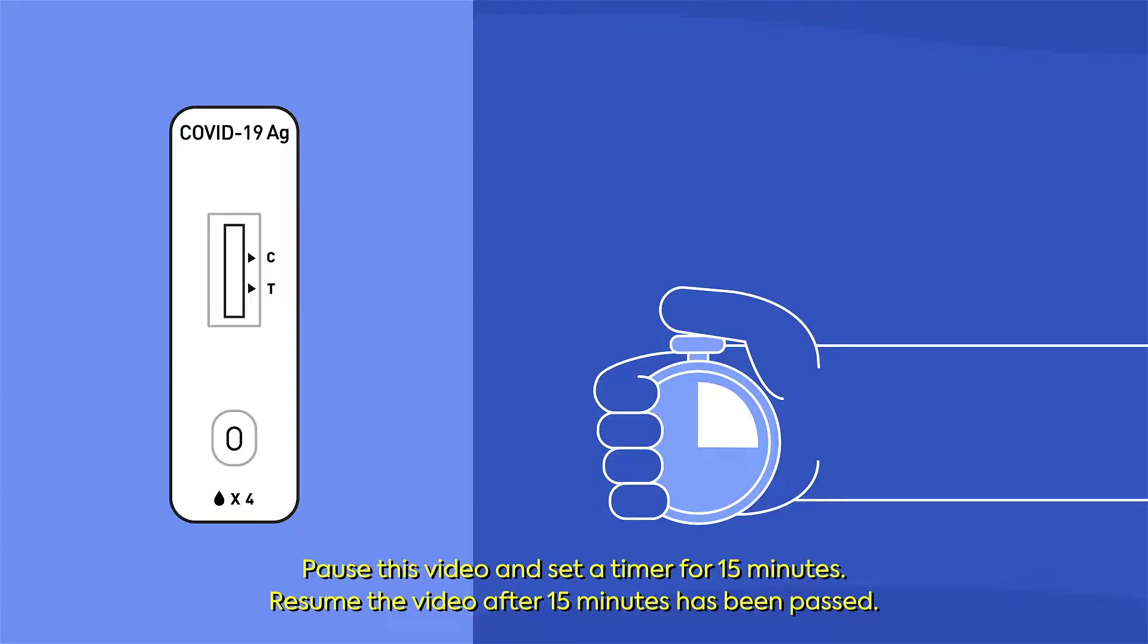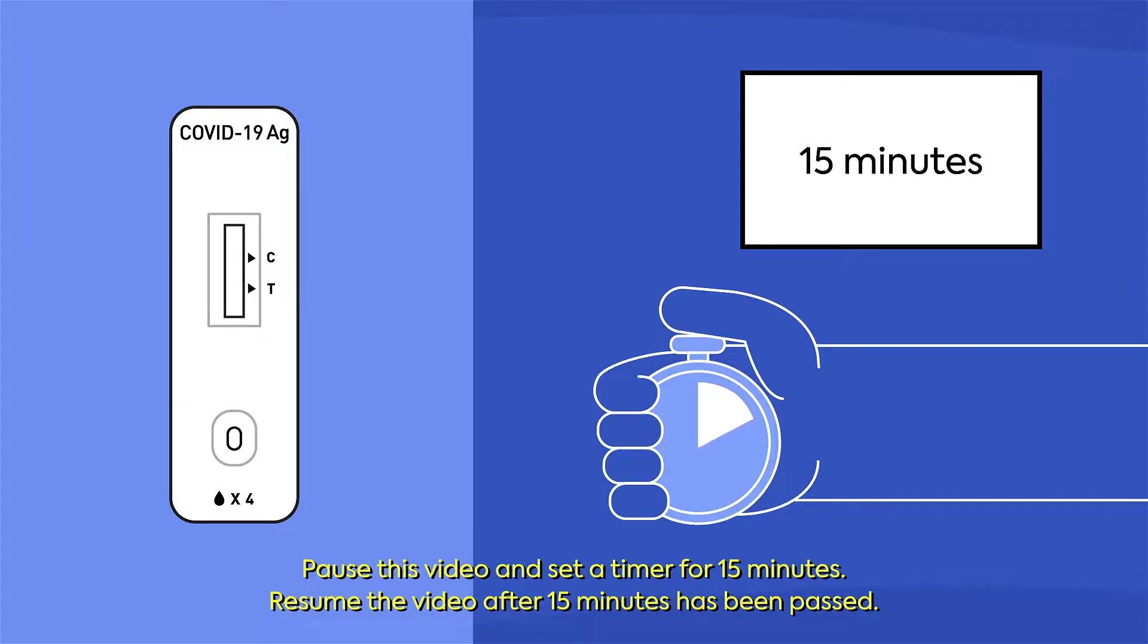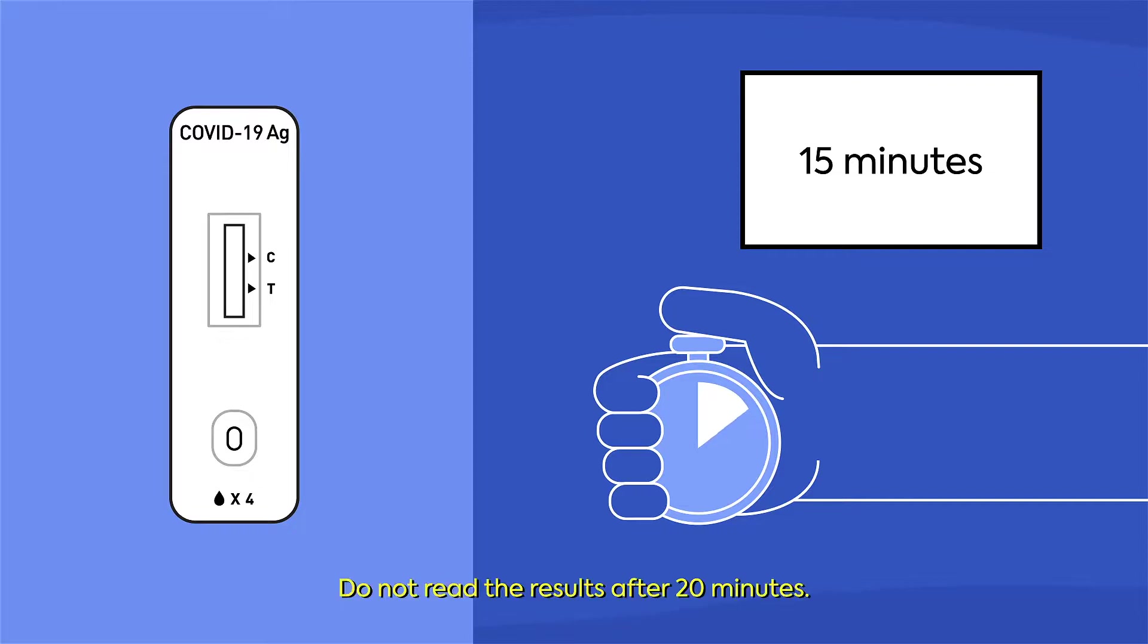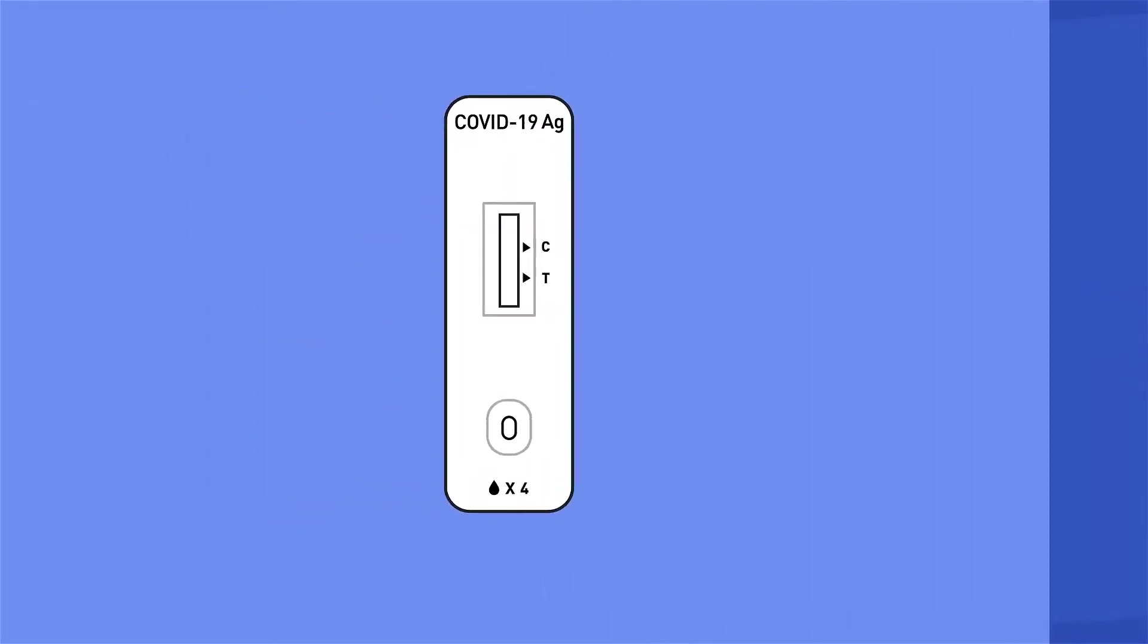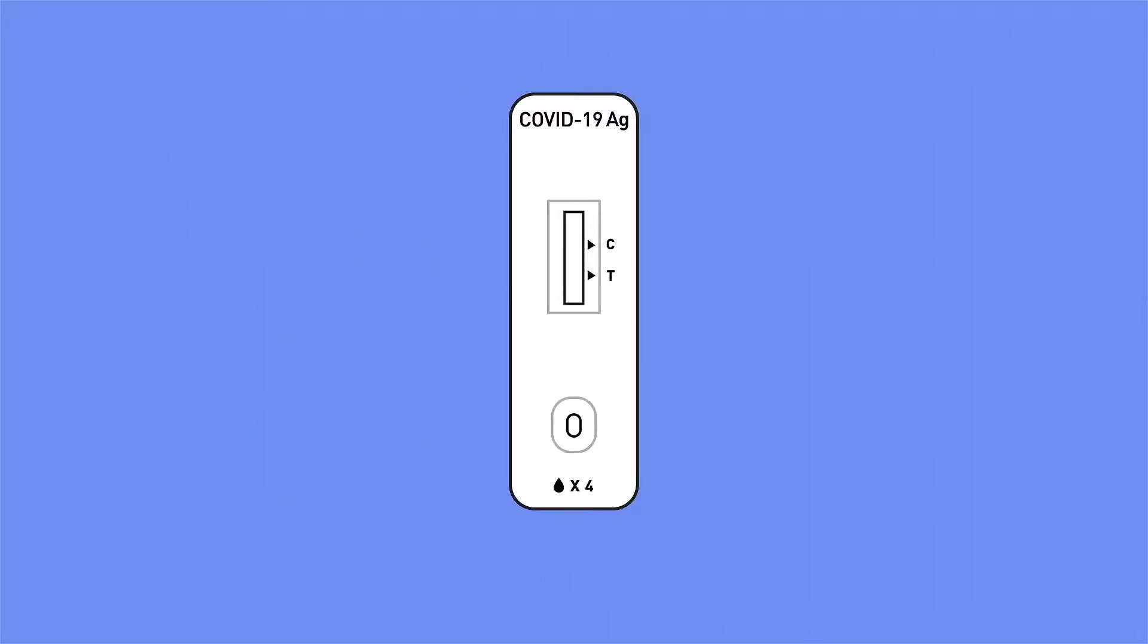As soon as your sample is added, pause this video and set a timer for 15 minutes. Resume the video after 15 minutes has been passed. Do not read the results after 20 minutes. This is it, the final countdown. Do not move or lift the test device during this time. Your test will be ready to read when the timer finishes. Now follow the steps to confirm your results.